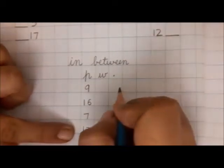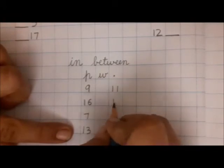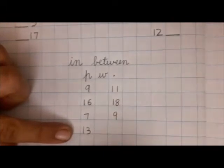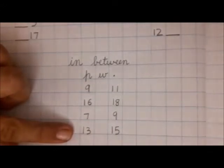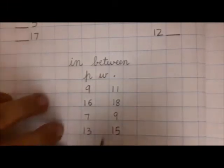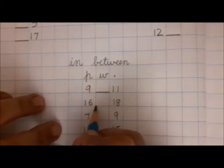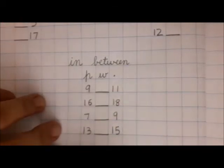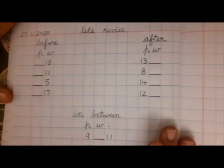Now we will write some numbers below P: 3, 9, 16, 7, and 13. Then below the dot we will write 11, 18, 12, 19, 9, and 15. And below W we will write dash, in between dash, dash, dash, and dash. With this we have finished our setting, my dear children.